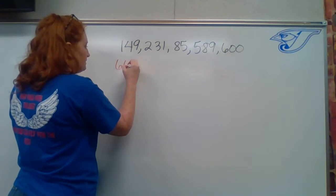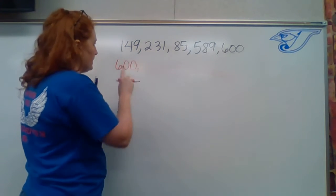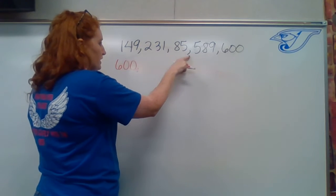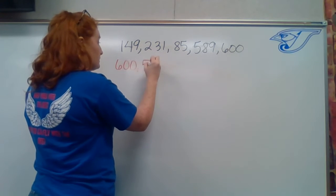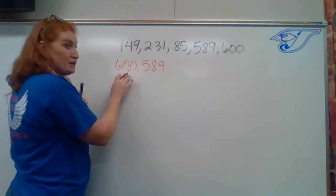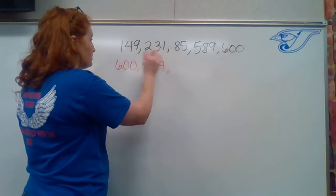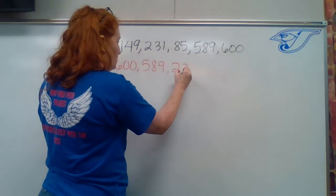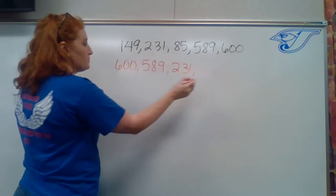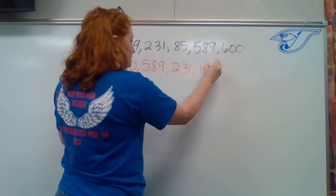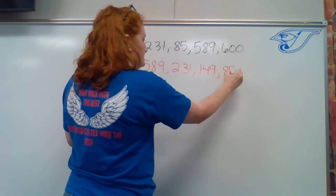That is our first number in our list. Next number, we're looking, 589. So again, our second number is large, but it is not the largest. As we go down, they get smaller. Next number, 231. Next number, 149. And the last number, which is the smallest, 85.